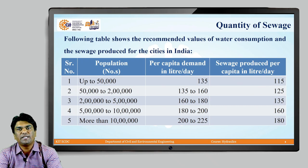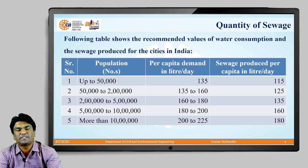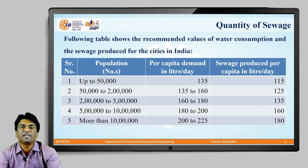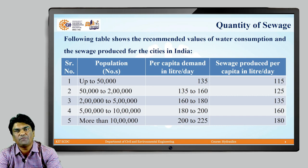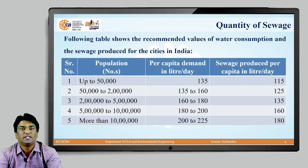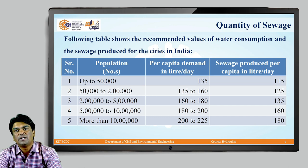This table shows the recommended values of water consumption and sewage produced for cities in India, presenting per capita demand in liters per day and sewage produced per capita per day. For example, if the population is up to 50,000, the per capita demand is assumed to be 135 liters per capita per day, and sewage produced is around 115 liters per capita per day — approximately 70 to 80 percent of supply. Multiplying 115 by the population gives the average daily sewage flow.